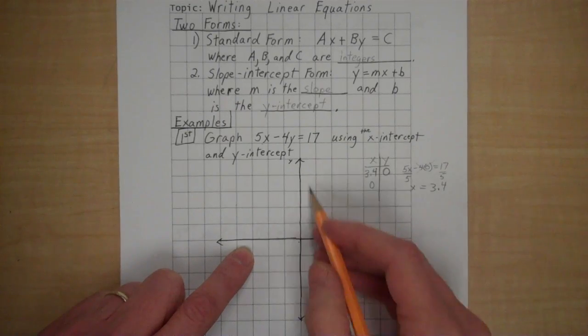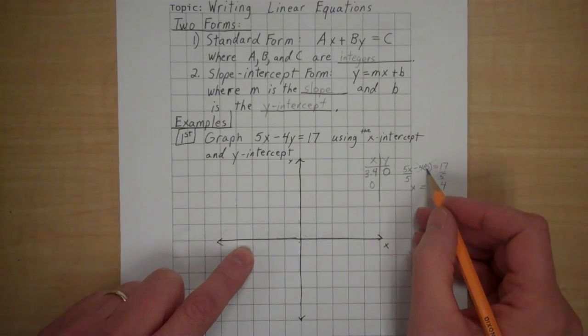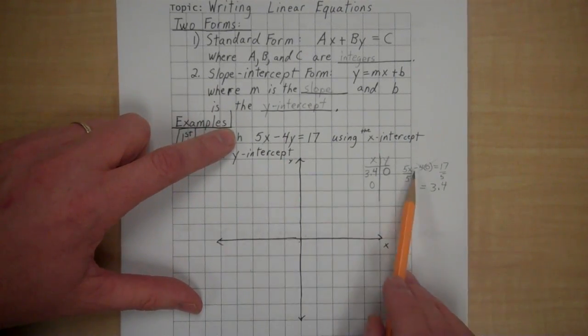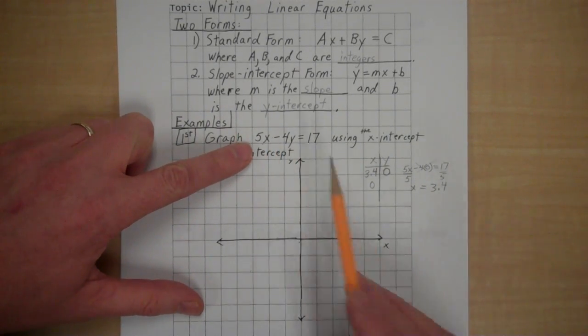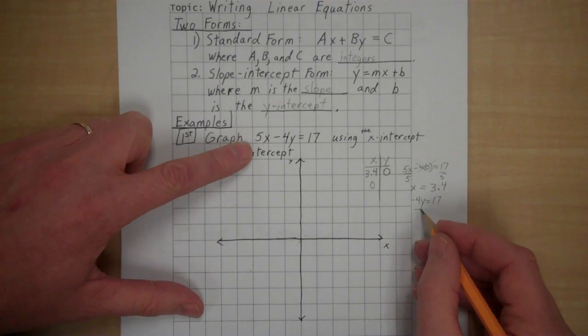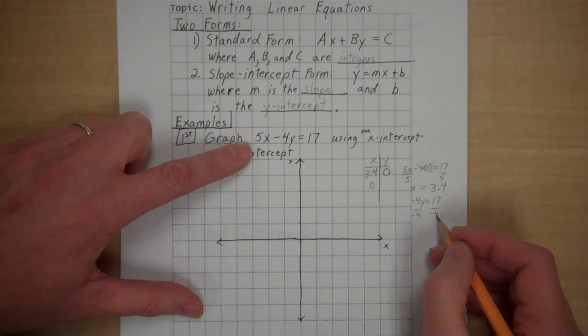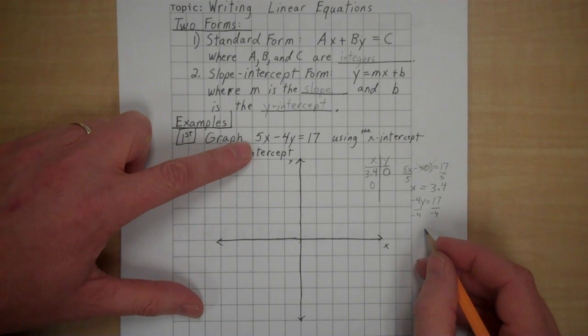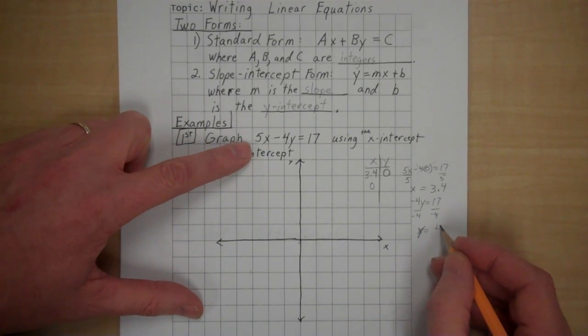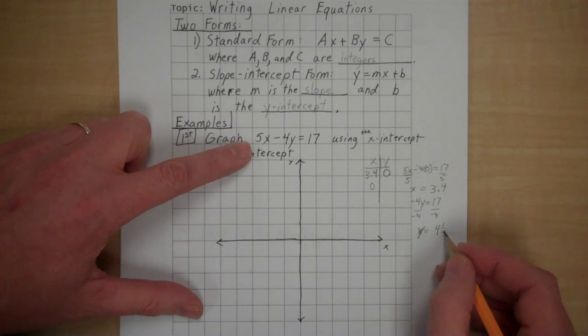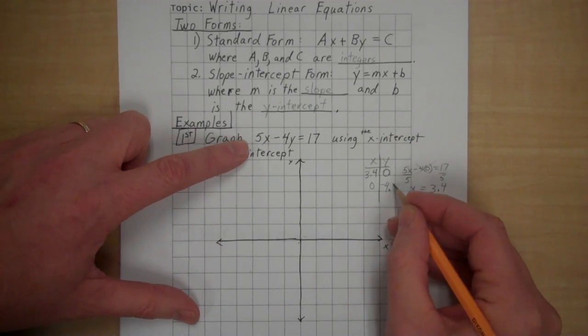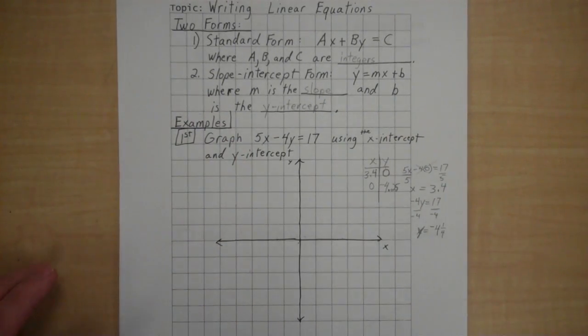Now, when x is 0, we'll be on the y-axis. So we'll do the same thing. Remember, when we put that 0 in for y, it just disappeared. So if we put the 0 in for x, we're basically solving the equation negative 4y equals 17. And then we'll divide by negative 4. So 17 divided by 4. 4 times 4 is 16. This is a y here. 4 times 4 is 16. So it's 4 and 1 fourth. And it's negative. Positive divided by negative is negative. So it's negative 4 and 1 fourth. I'll put 0.25. Negative 4.25. We'll just stay with decimals.